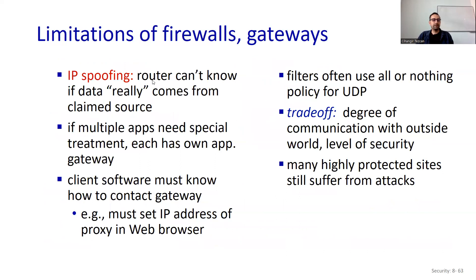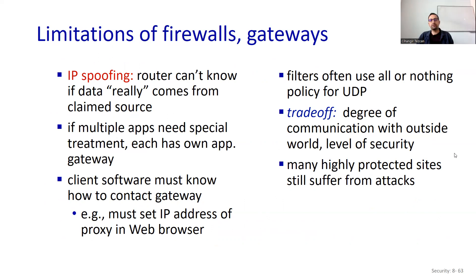Limitations of firewalls and gateways: IP spoofing — the router cannot know if data really comes from the claimed source. If multiple apps need special treatment, each requires its own application gateway. Client software must know how to contact the gateway. Filters often use an all-or-nothing policy for UDP. There is a tradeoff between the degree of communication with the outside world and the level of security. Many highly protected sites still suffer from attacks.